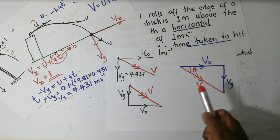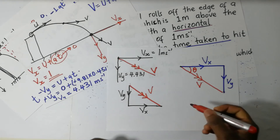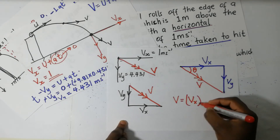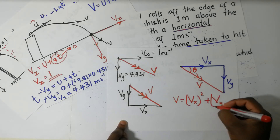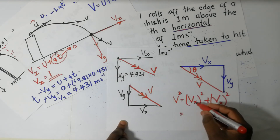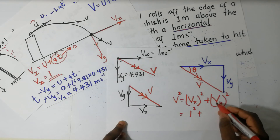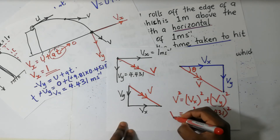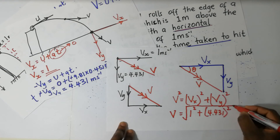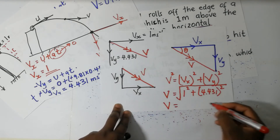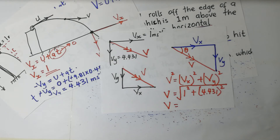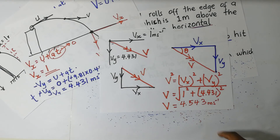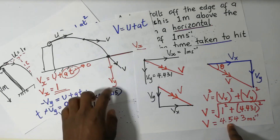Using Pythagoras: v equals the square root of one squared plus 4.431 squared. That gives us our final velocity v — the velocity with which the ball hits the ground. The velocity is a vector quantity, so we also need to find the direction, which means we need to find angle theta.